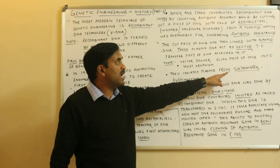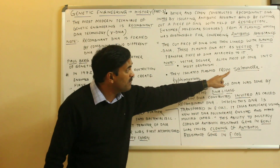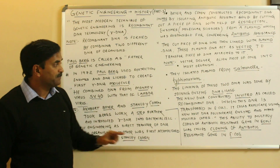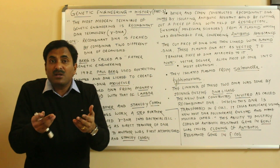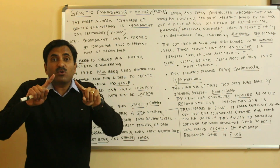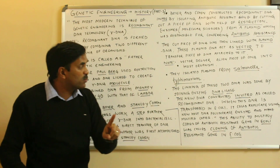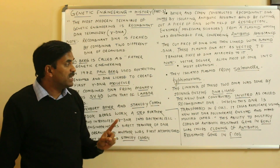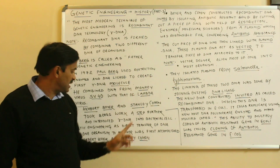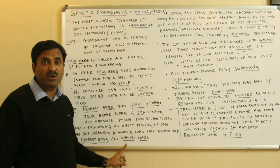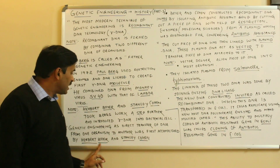Herbert Boyer and Stanley Cohen isolated the plasmid from a bacteria called Salmonella typhimurium. The new DNA constructed was in vitro — meaning it was synthesized outside the body in a laboratory — and was called the recombinant DNA. So the credit for the formation of the recombinant DNA goes to Herbert Boyer and Stanley Cohen, which is why NCERT states that the first recombinant DNA was formed by them.